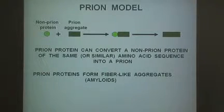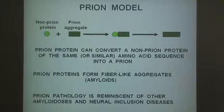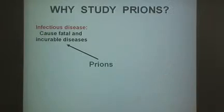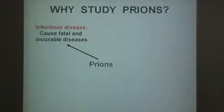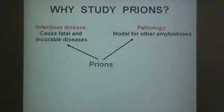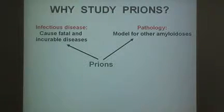In this way, the amyloids formed by prions resemble the amyloids formed in case of some other so-called neural inclusion diseases. So why is it interesting to study prions? First of all, those are infectious diseases which are dangerous on their own. However, maybe even more important is that prions provide a model for studying other amyloid diseases, and some of those other amyloid diseases are very widespread.